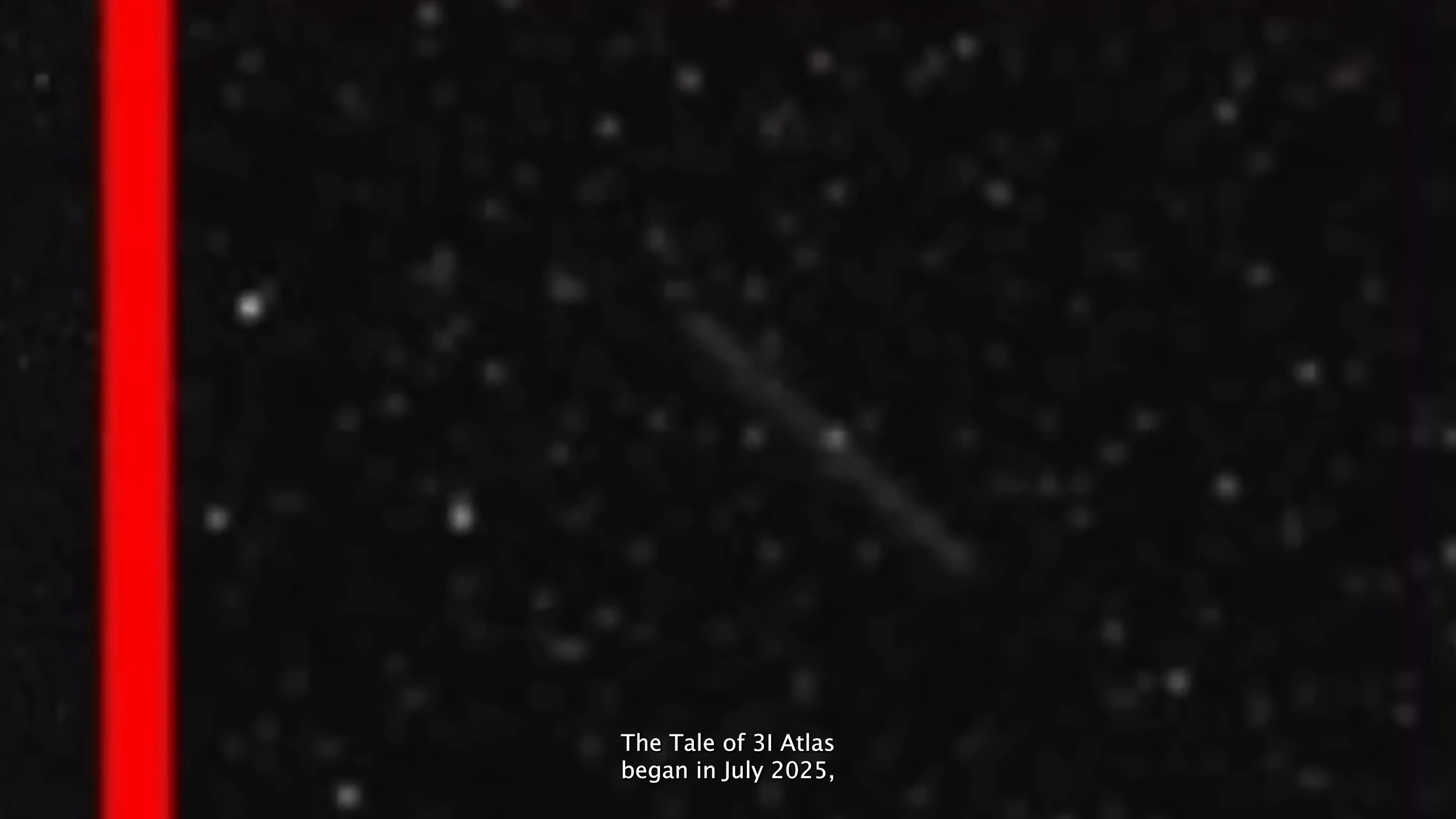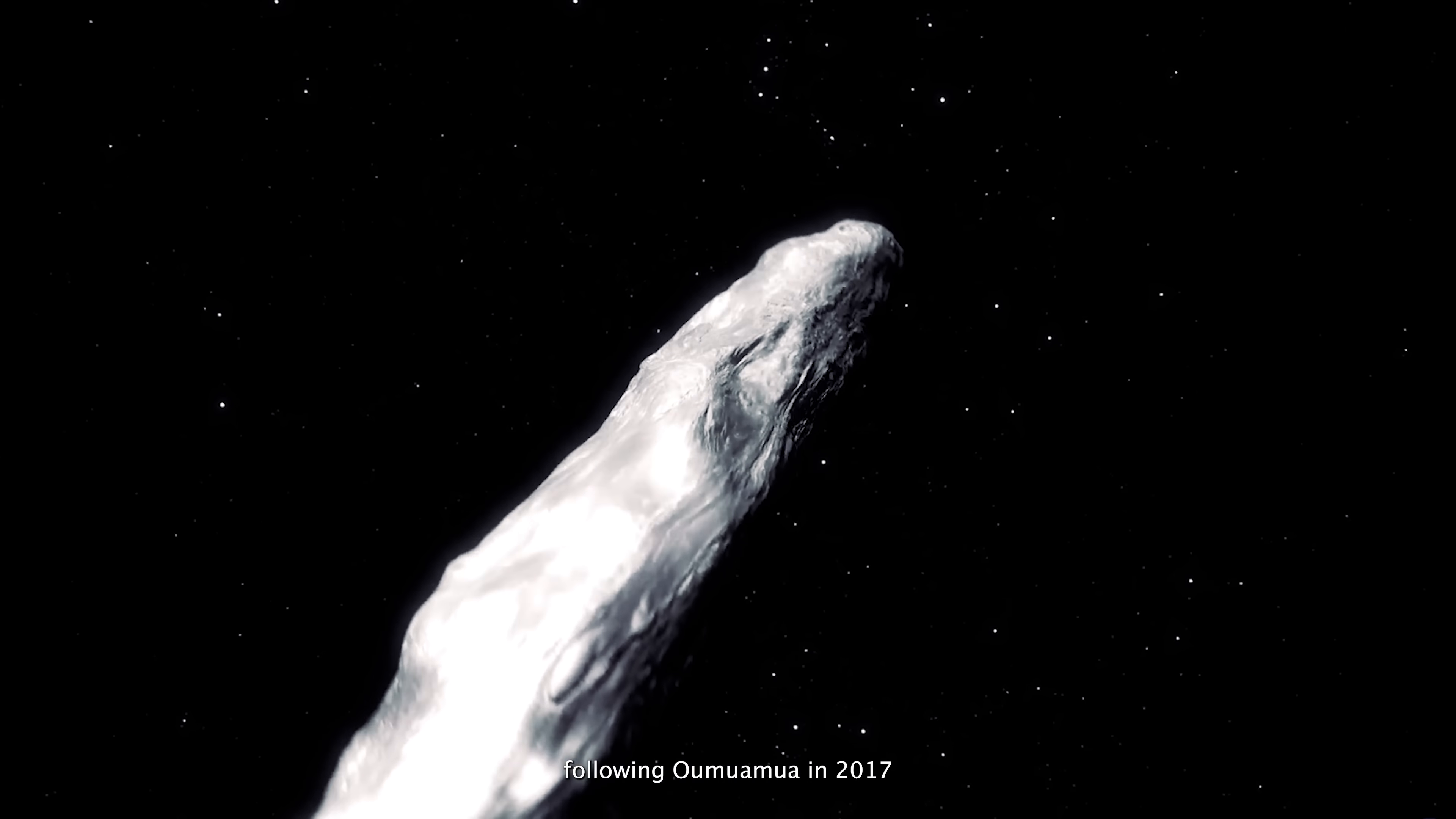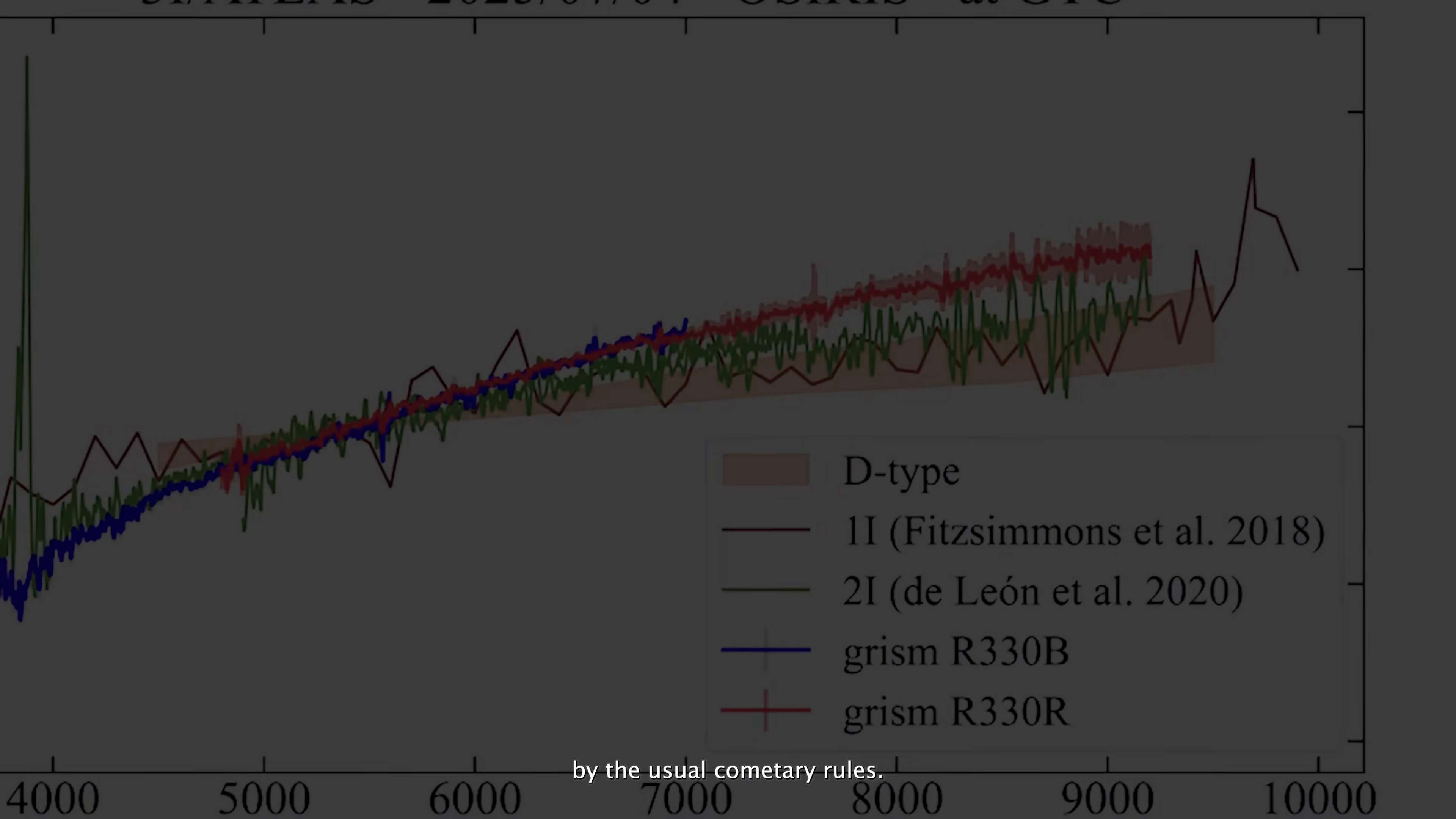The tale of 3i Atlas began in July 2025, when astronomers scanning the skies with Hawaii's Atlas survey spotted a faint, fast-moving object on a trajectory too wild to be bound by the Sun's gravity. Its hyperbolic orbit confirmed it as the third known interstellar traveler, following Oumuamua in 2017 and 2i Borisov in 2019. By early October, it had swept across Mars' orbital path, where the ExoMars Trace Gas Orbiter managed to snap a rare, distant image. That image showed a bright, compact coma, but no distinct tail, an early sign that 3i Atlas doesn't play by the usual cometary rules.